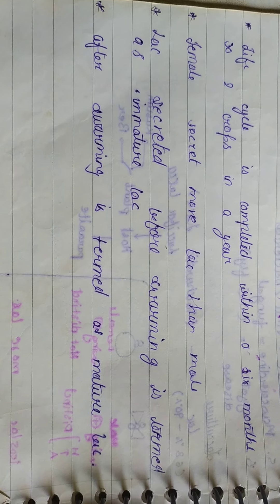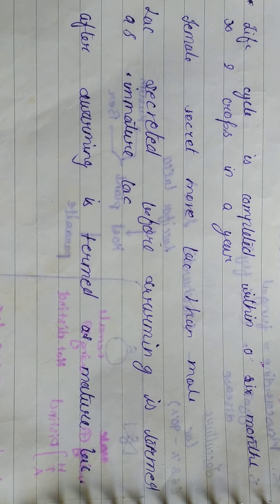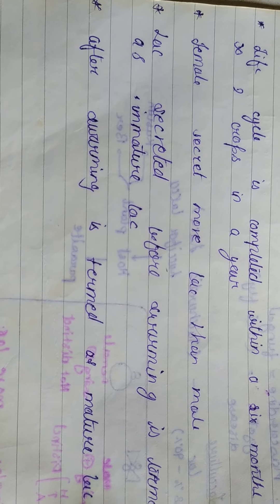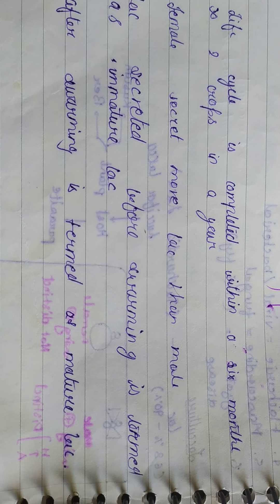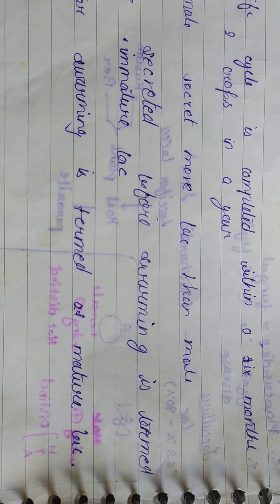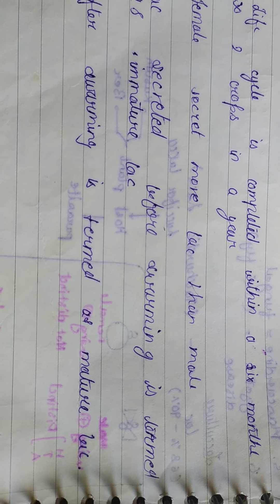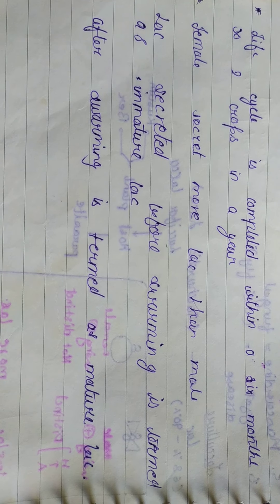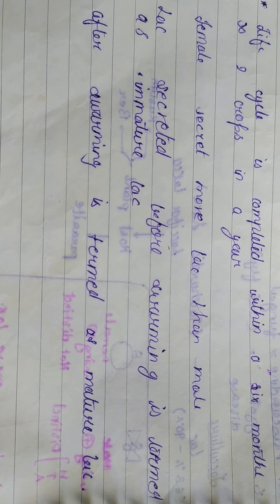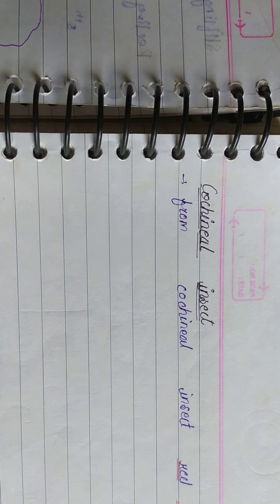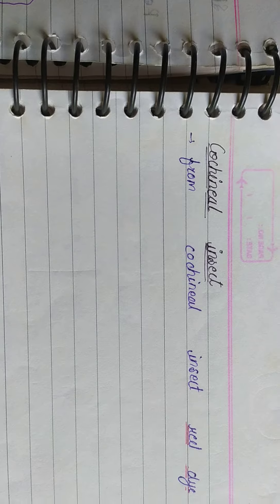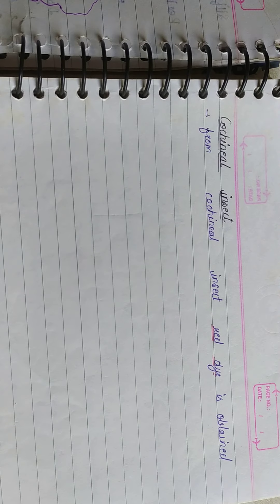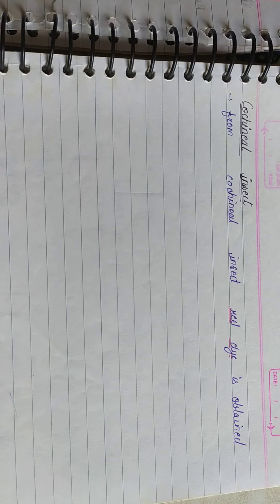Lac secreted before swarming is immature and commercially not used. After swarming, the lac secreted is termed mature lac and is commercially valuable. The cochineal insect is another economically important insect from which red dye is obtained. Rearing and breeding of such insects provides significant economic and commercial benefits.